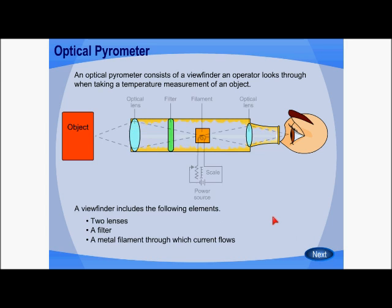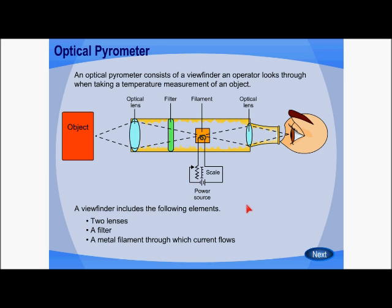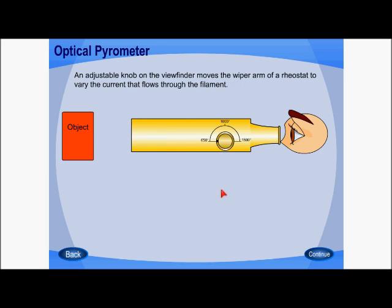A pyrometer consists of two optical lenses, a filter, and a filament. The filament used is similar to the filament of a regular halogen bulb. Electricity passing through the filament is controlled by means of a rheostat. A rheostat is a variable resistor used to control the flow of current. In this construction, the rheostat is calibrated in terms of temperature — from 650 degrees centigrade to 1500 degrees centigrade.